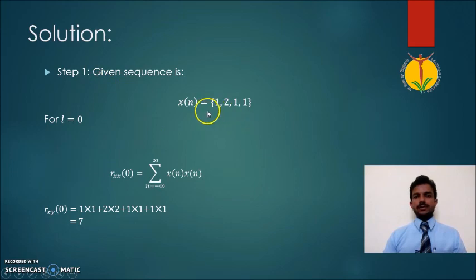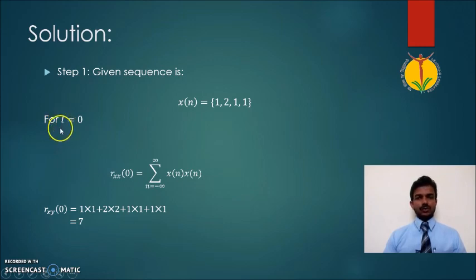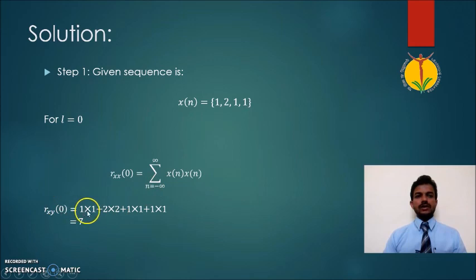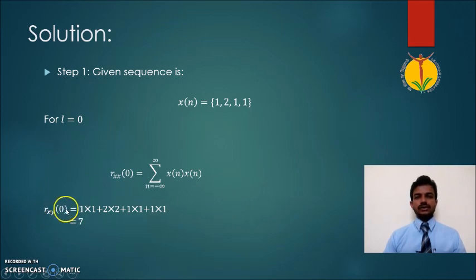In the first step, let us write the sequence as-is by applying L = 0. When we apply L = 0 in the equation, the equation reduces so that we are simply multiplying the sequence with itself for each sample n. After performing the multiplication and addition procedure for these different samples, we get the first value R_xx(0).